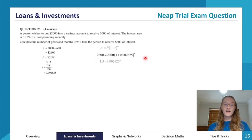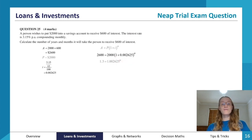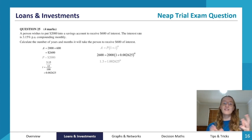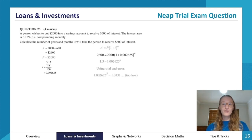To simplify, we divide both sides by 2,000. That gives us 1.3 equals (one plus i) to the power of n. To solve for n, we'll use trial and error — which is a totally appropriate method here, since using logarithms gets really complicated and isn't required in general math.